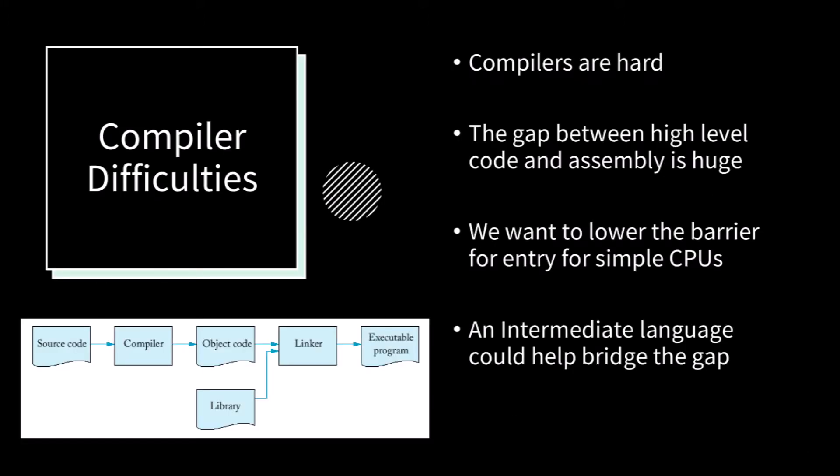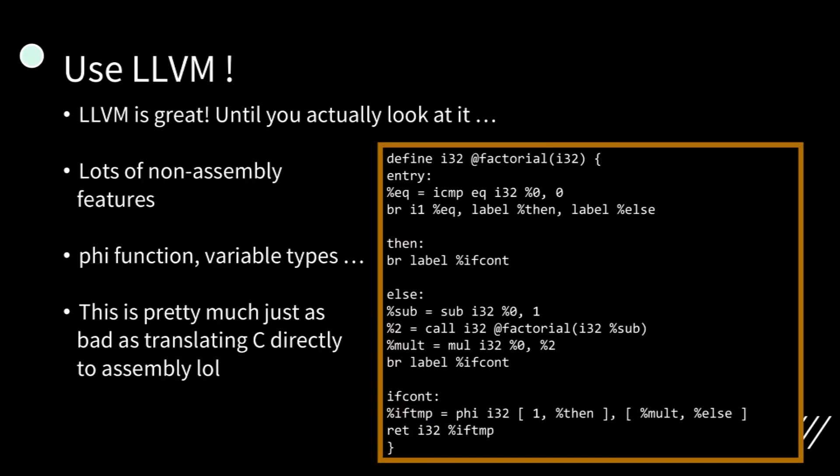So why are compilers hard? This is because the gap between high-level code and assembly code is huge. What we want to do is lower the barrier for entry for simple, low-level CPUs, and an intermediate language could help bridge this gap. So as soon as I mention intermediate language, you should think LLVM. Well, LLVM is great until you actually look at it. LLVM contains lots of non-assembly features, things such as the phi function and variable types. All of these don't exist in assembly, or at least the types of assembly that we're interested in — the simple, low-level CPUs. So LLVM ends up being pretty much just as difficult to translate to assembly as translating raw C code, which defeats the point of an intermediate language.